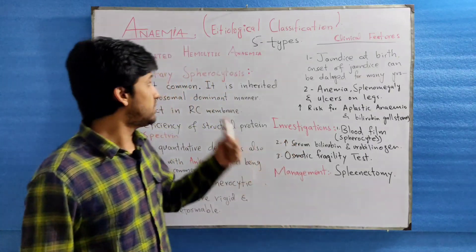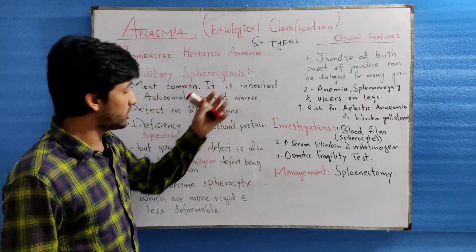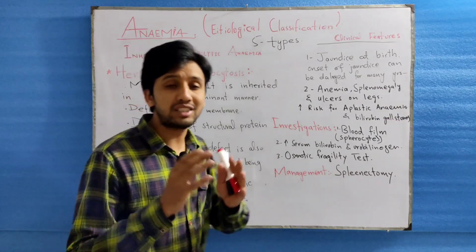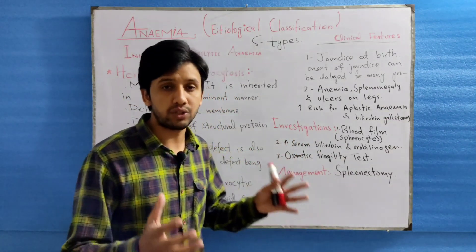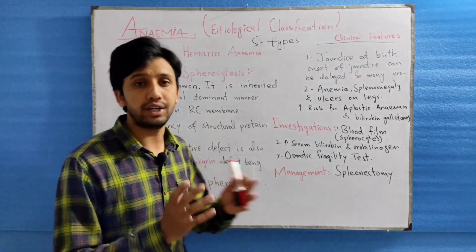Coming to the first one, which is hereditary spherocytosis, which is actually a red cell membrane defect in which the red blood cells which are biconcave usually become spherocytic in nature.